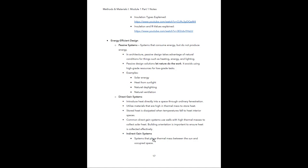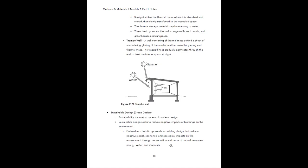Indirect gain systems place thermal mass between the sun and the occupied space. Sunlight strikes the thermal mass where it is absorbed and stored, then slowly transferred into the occupied space. The thermal storage material may be masonry or water. There are three basic types of thermal storage approaches: thermal storage walls, roof ponds, and greenhouses or sun spaces. A Trombe wall consists of a thermal mass behind a sheet of south-facing glazing. It traps solar heat between the glazing and thermal mass, and the trapped heat is gradually permeated through the wall to heat the interior space at night.